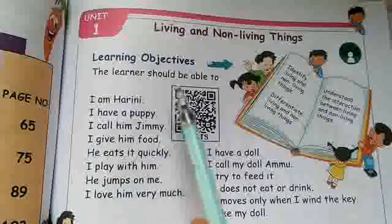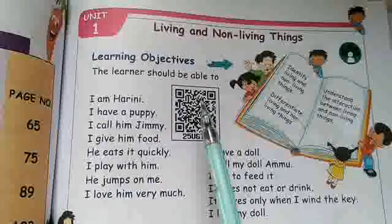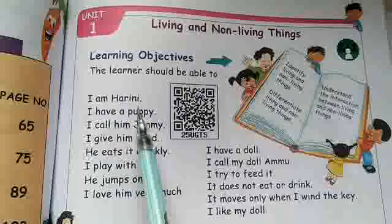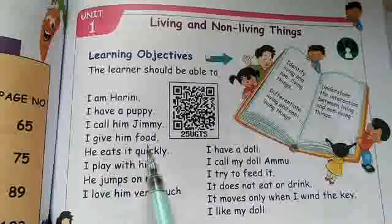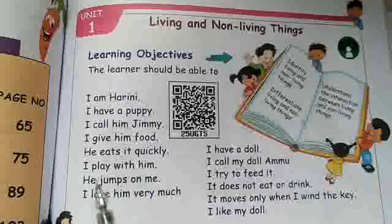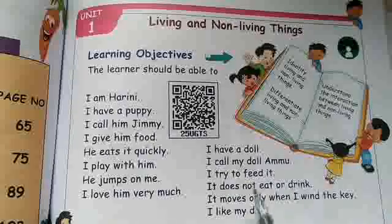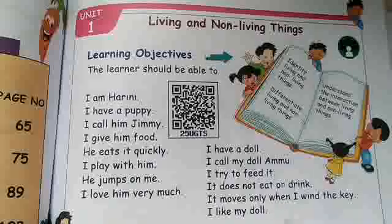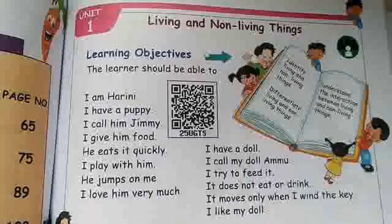For learning objectives, they are given some sentences. We must read this first. I am Harini. I have a puppy. I call him Jimmy. I give him food. He eats it quickly. I play with him. He jumps on me. I love him very much. Next: I have a doll. I call my doll Ammu. I try to feed it. It does not eat or drink. It moves only when I turn the key. I like my doll.